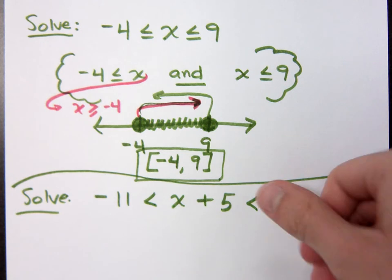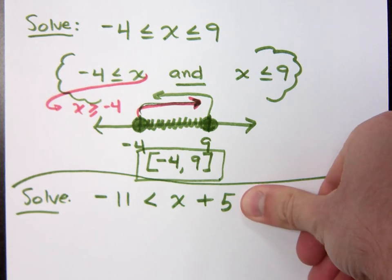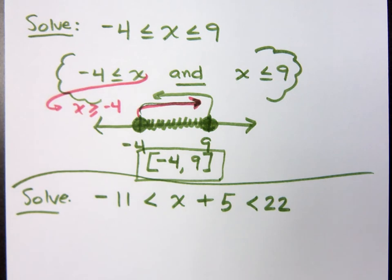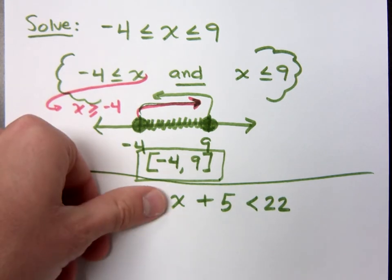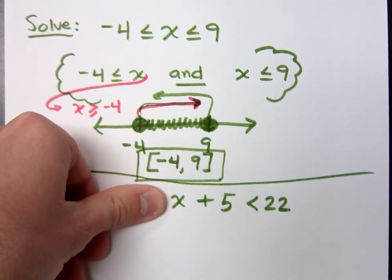So basically I've got this guy right here. If I had this inequality, then negative 11 is less than x plus 5. What would you do to solve that? Subtract 5 on both sides? Okay, but wait a minute, what if I had this though? What would I do? I would still subtract 5 on both sides, right?